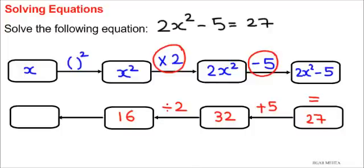Now opposite of squaring of a number or an alphabet is taking out the square root. So square root of 16 will give me 2 values positive and negative 4. So x equals positive 4 and x equals negative 4.